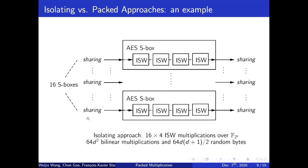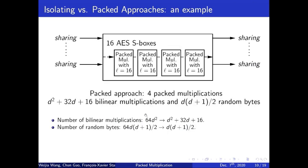Here, I gave an example to illustrate the theoretical performance gain for the masked 16 S-boxes in one AES round using our approach. The AES S-box was designed as the inverse in the finite field F 2^8, which can be decomposed into four multiplications and several linear operations. When we use the isolating approach with the ISW multiplication, we need to implement the 16 S-boxes separately, and it requires 16 times 4 times d^2 bilinear multiplications and 16 times 4 times d^2 random bytes. But when it comes to the case of our packed multiplication, we can see that only 4 packed multiplications with the number of parallel multiplications L equals 16 are needed. Thanks to the amortization, it requires a much smaller number of bilinear multiplications and random bytes.